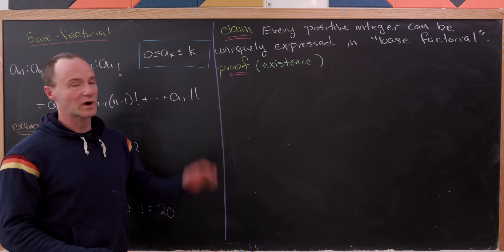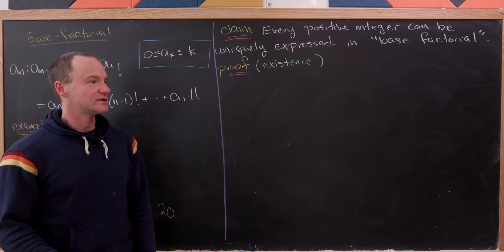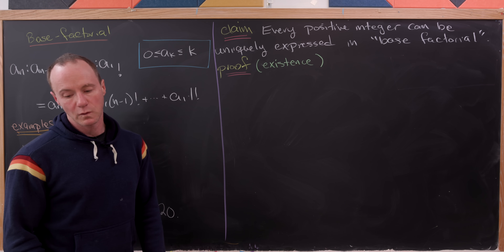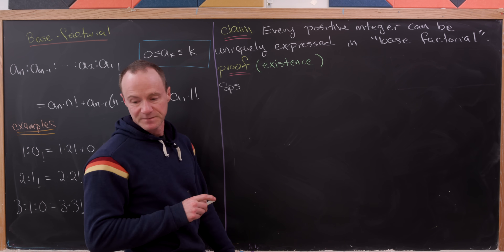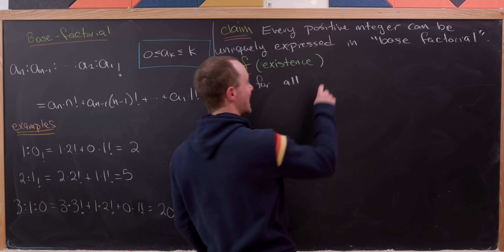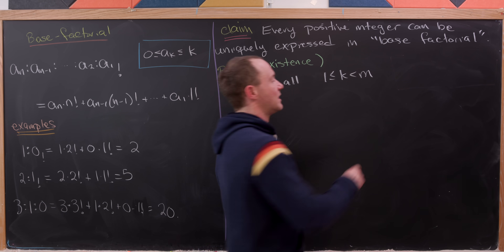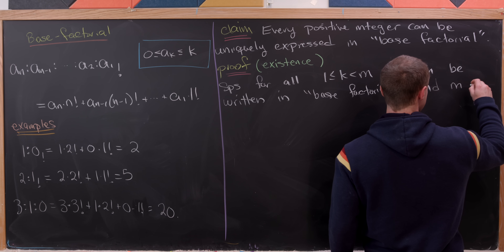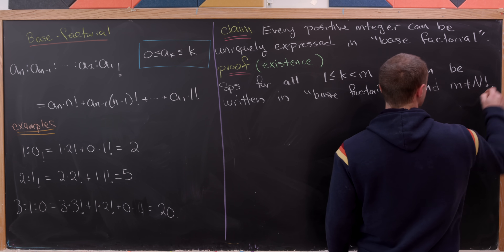We're going to start with our existence proof and do that by induction. Notice that we've done some base cases over here; you can do some more if you want to. We'll start with a strong induction hypothesis: suppose for all numbers k between 1 and some number m, the number k can be written in base factorial. We're also going to assume that our number m is not a factorial itself — that just makes everything nice.